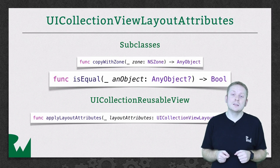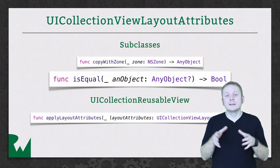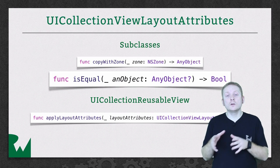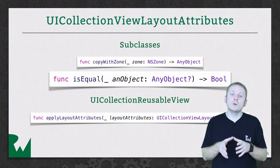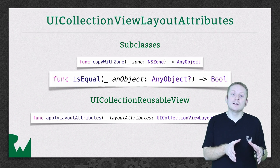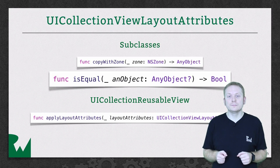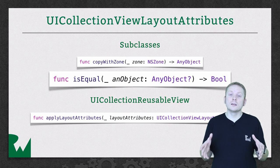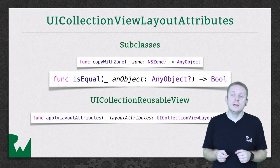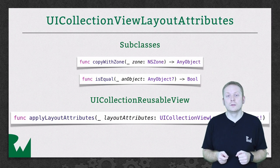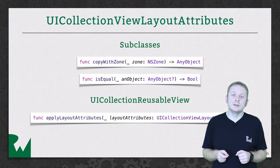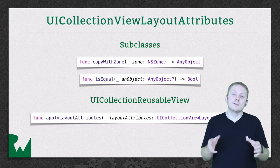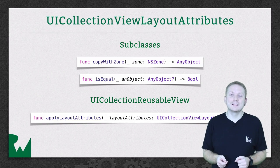Since the default implementation of isEqual only compares properties that exist on the default class, you must override it, compare your custom properties, and if they all match, invoke the super implementation and return the resulting value. To access your custom attributes in your cells or supplementary views, which are all instances of UICollectionReusableView, simply override applyLayoutAttributes, invoke the super implementation, and then cast the object you're handed into an instance of your custom layout attributes class, and you can access all the properties you defined on it.